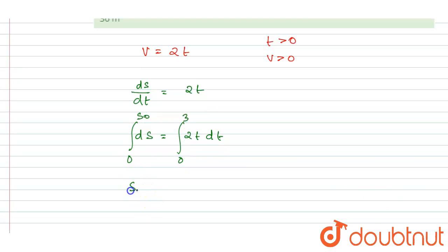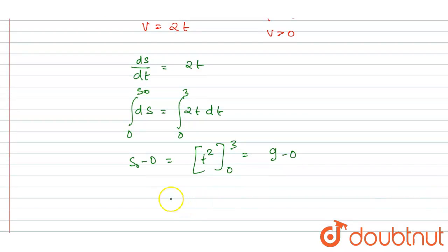So let's say the distance traveled in 3 seconds is s₀. So if I put the limit here, I will write s₀ minus 0. It will be t squared. And 2 will get cancelled out here. So it is 9 minus 0.